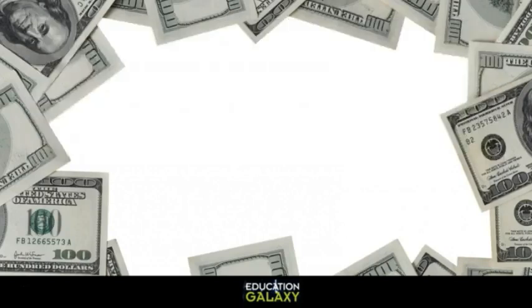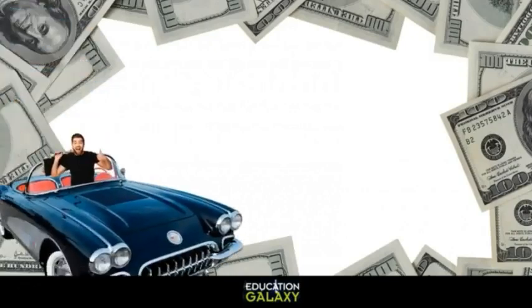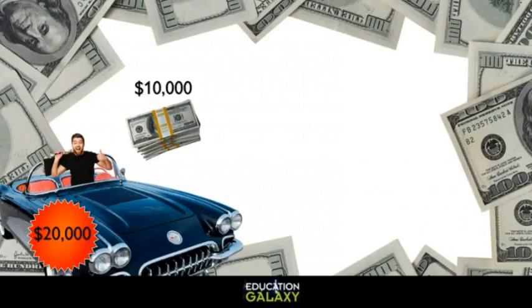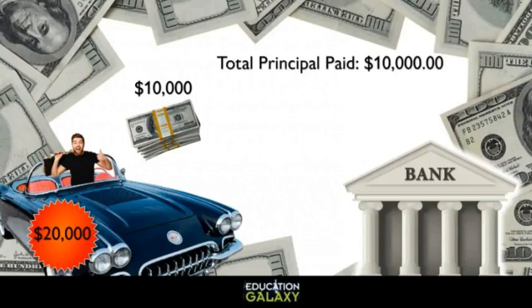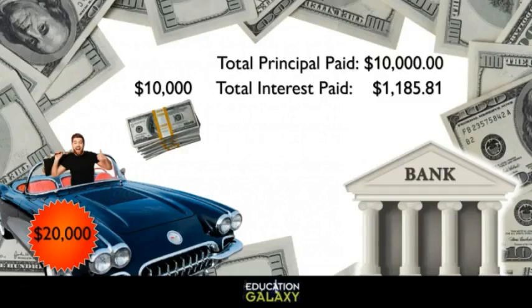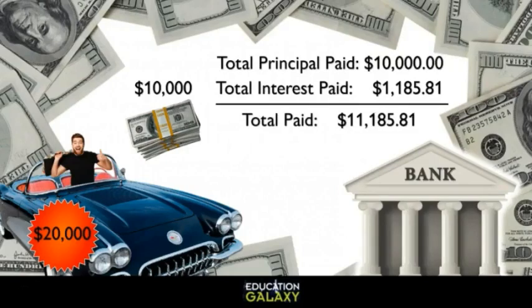For example, Sam wants to buy a car that costs $20,000, but he only has $10,000. He needs $10,000 more to pay, so he borrows money from the bank. He needs to borrow $10,000, so that's his principal. He has to pay interest on the amount he borrowed, so he will pay $1,185.81 in interest. The total amount Sam pays the bank is $11,185.81.